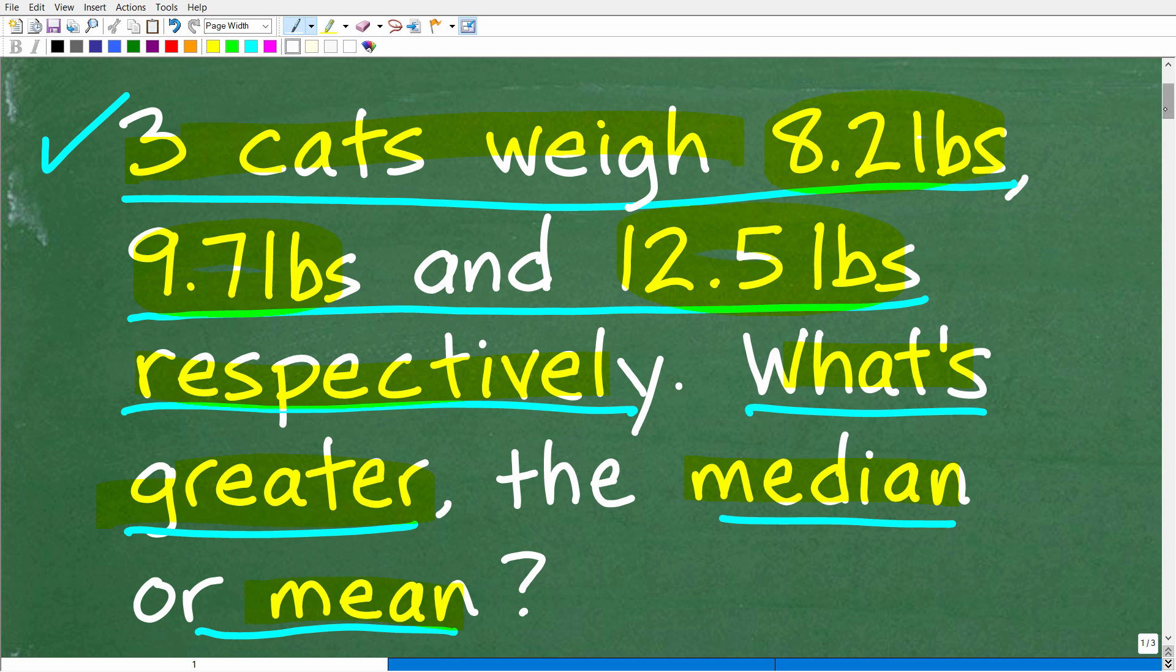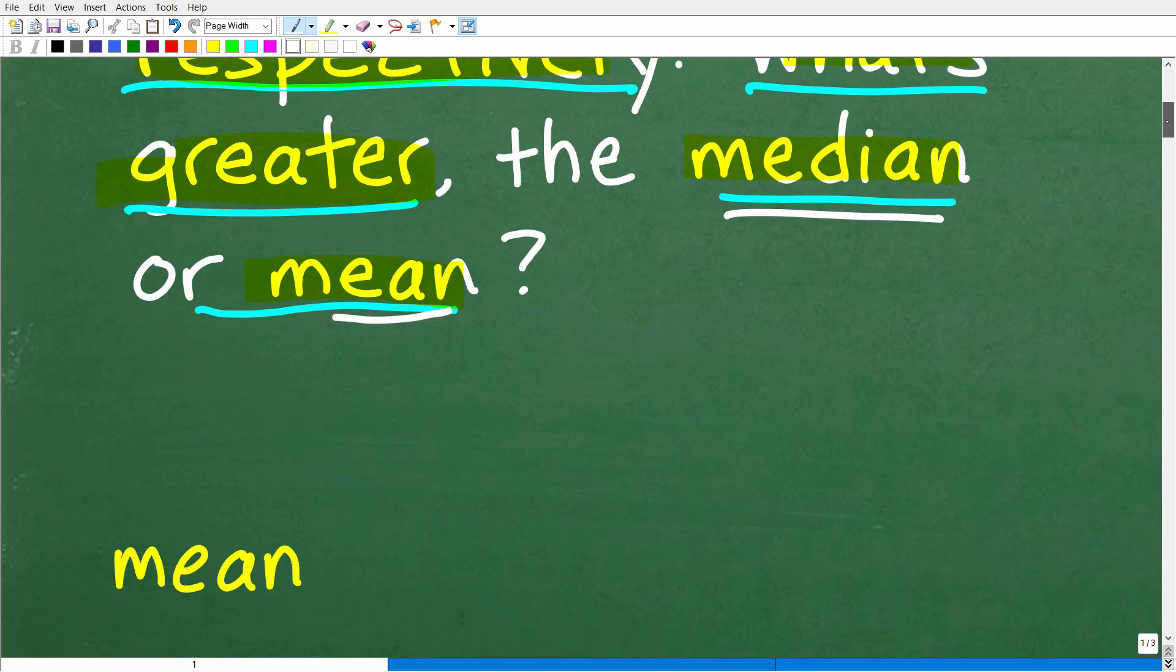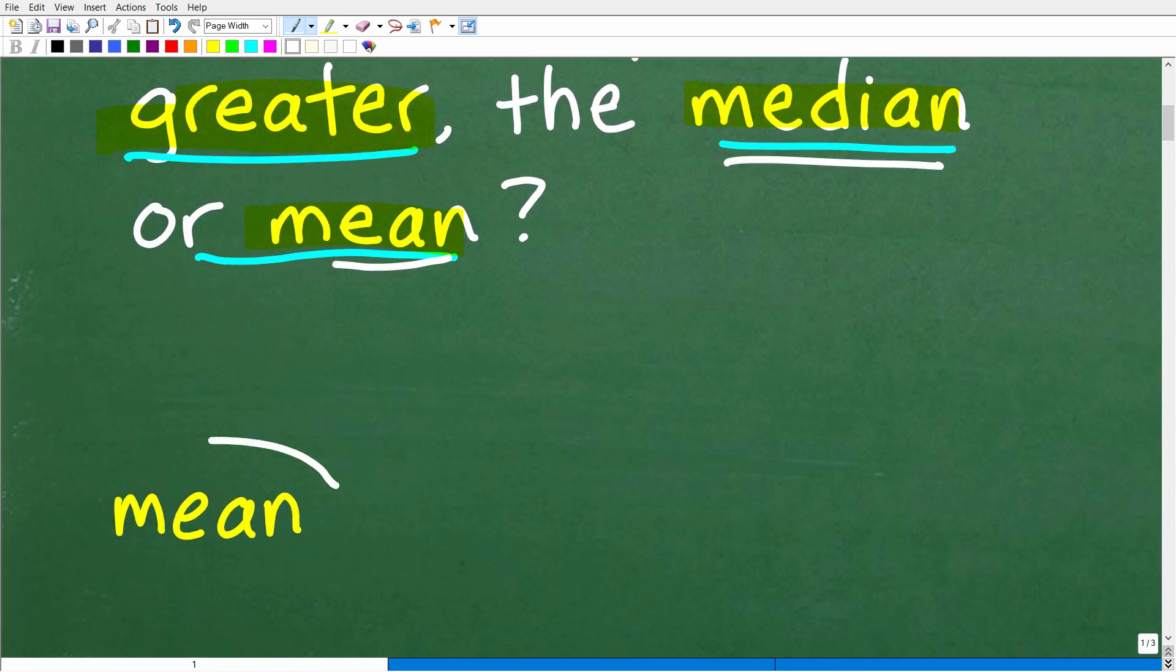Alright, so let's go ahead and take a look at the answer. So the correct answer is going to be either the median is greater or the mean is greater. And in this case, the right answer is the mean. The mean is greater in value. Now, I'm not going to show you the value of the median or the mean just yet, but this is the answer.